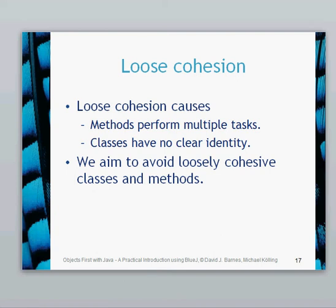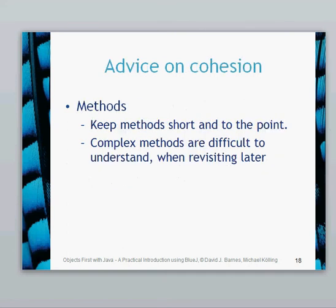Things which cause loose cohesion include methods that perform multiple tasks. We want methods which do one single, very obvious task — not multiple things. Classes should have a clear logical identity so we can say what their job is, and we aim to avoid loosely cohesive classes and methods. Keep methods short and to the point. If your method is getting longer, it's probably because it's doing more than one task, unless it's a complex mathematical function that genuinely requires a lot of code.